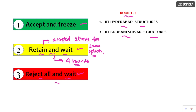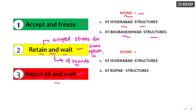For example, if you kept retain and wait in round one and coming to round two, you got these options again — IIT Hyderabad Structures is anyway retained with you in round two because you selected retain and wait in round one. In round two also, if you want to keep IIT Hyderabad Structures as retain and wait, then automatically in round three, you don't have the option to keep the same option as retain and wait because it is accepted for two times for the same option only.